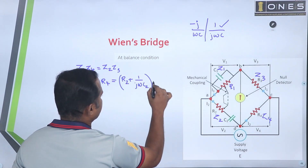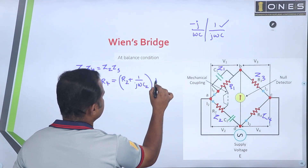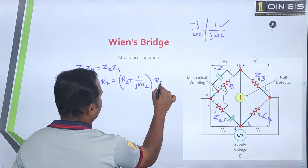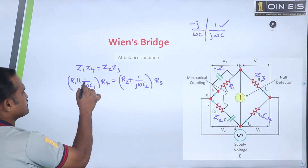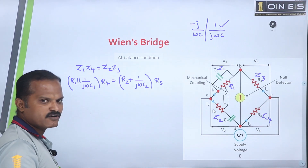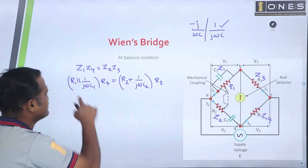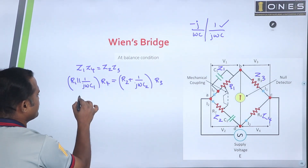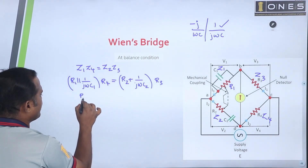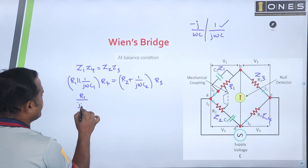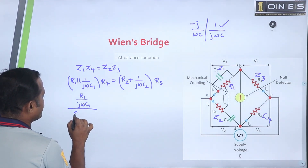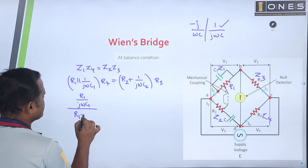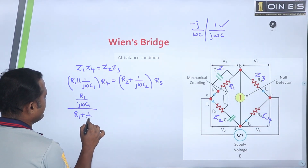Set 3 is R3 with C1 in parallel combination. The parallel impedance is R1 multiplied by (1 over j-omega-C1), divided by R1 plus (1 over j-omega-C1). This forms the impedance expression for set 3.